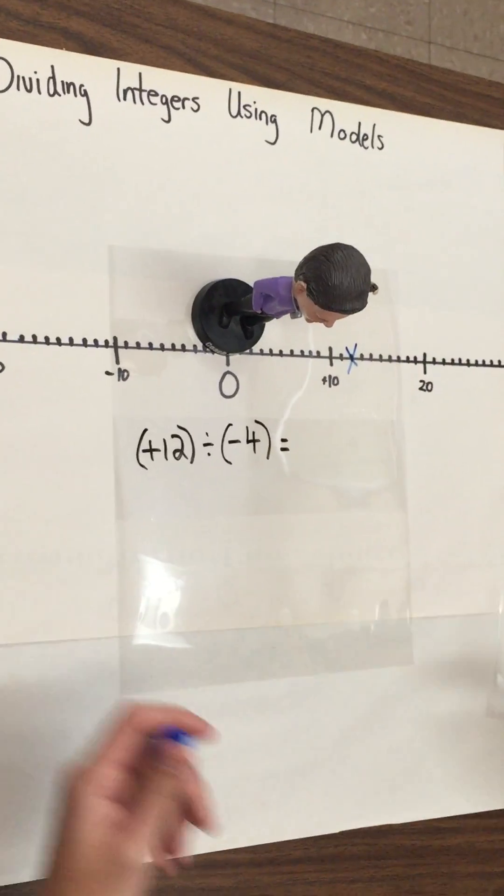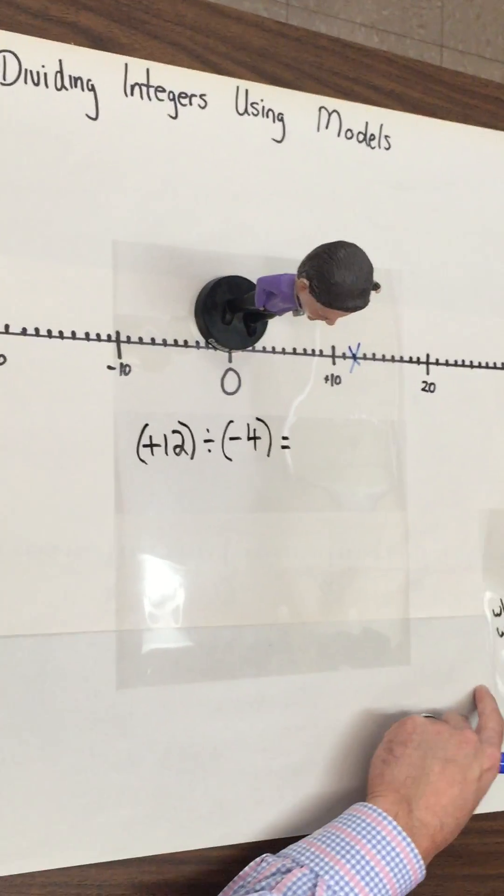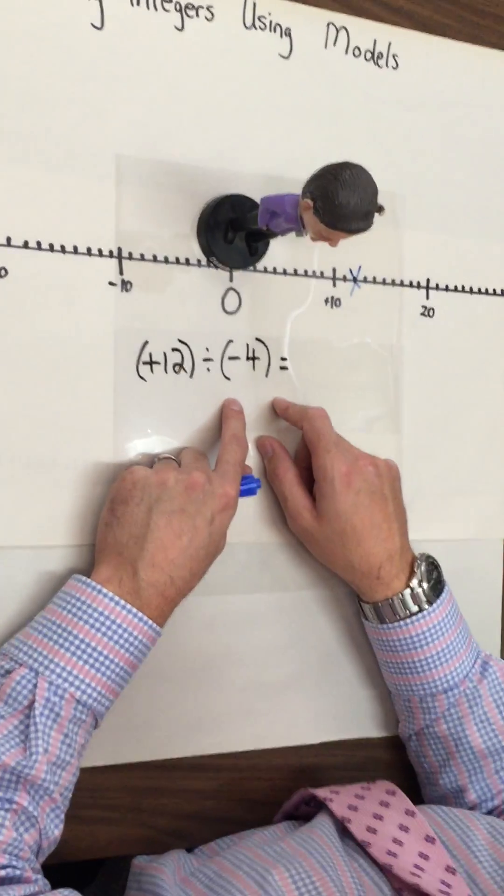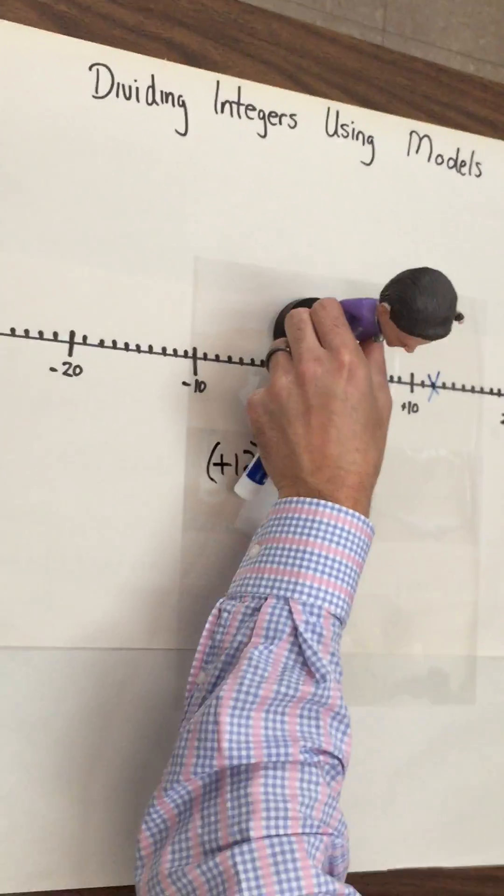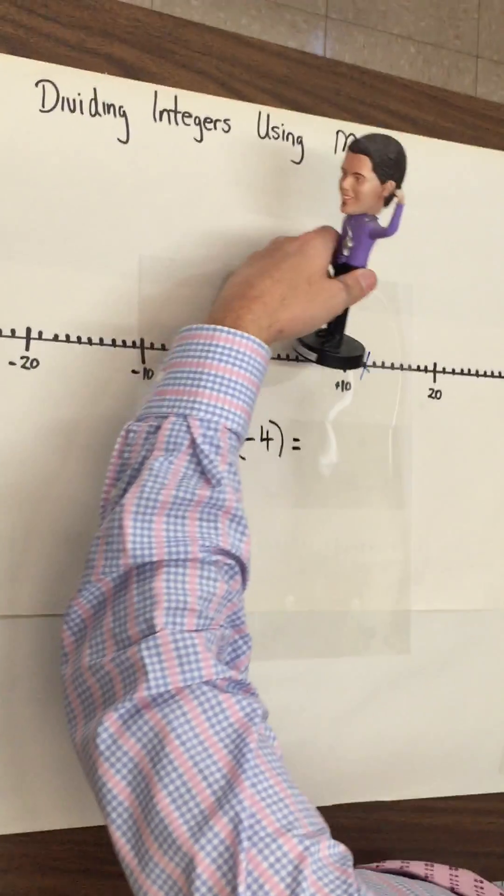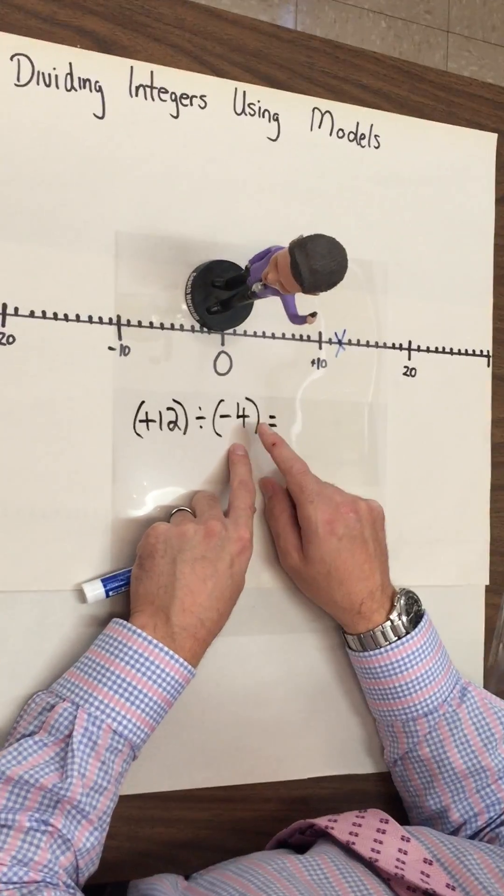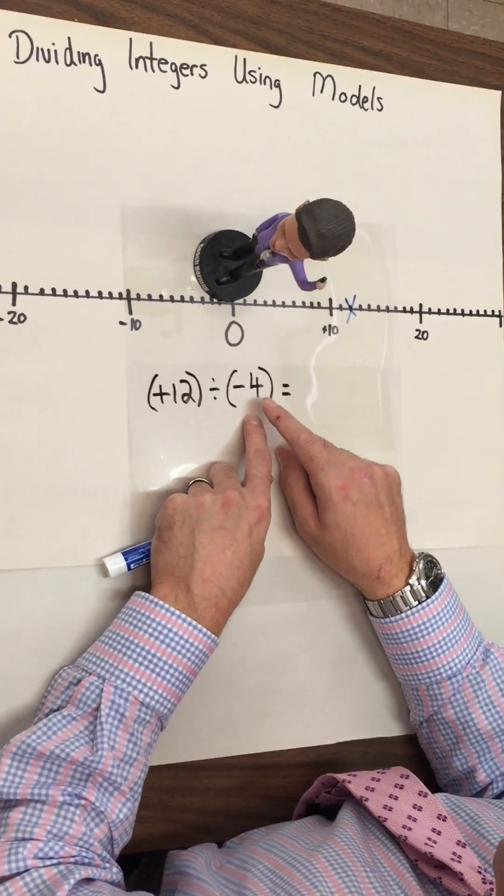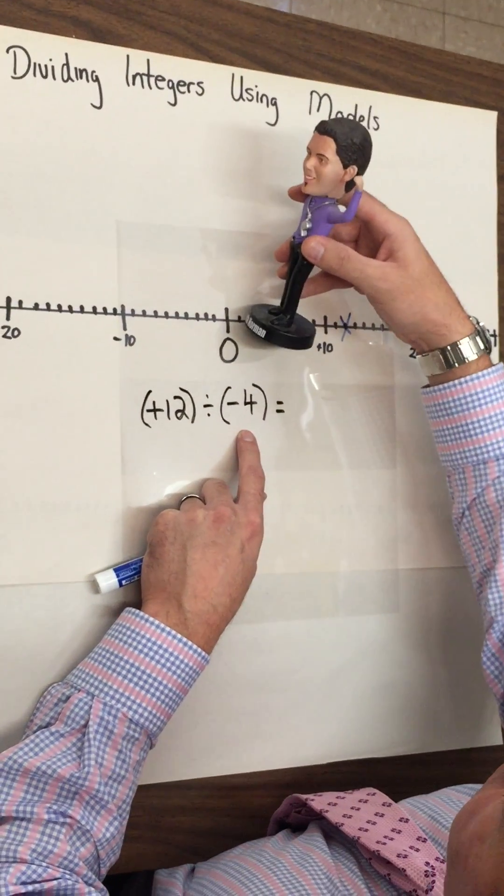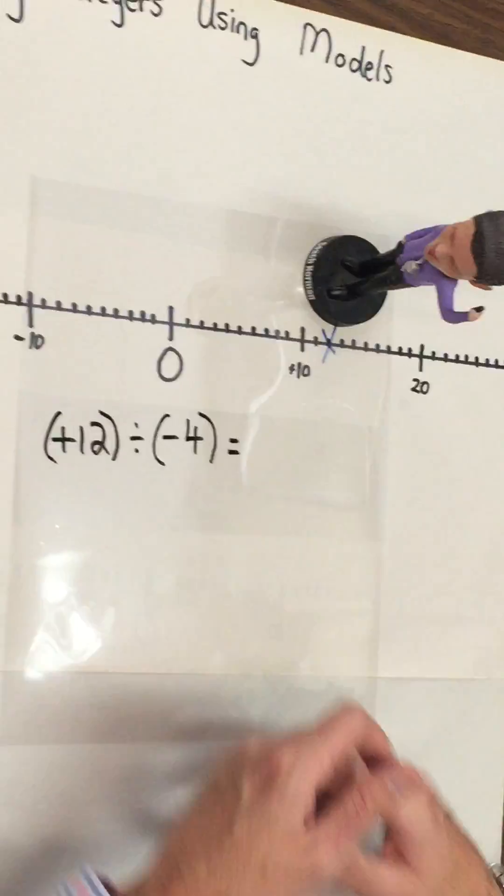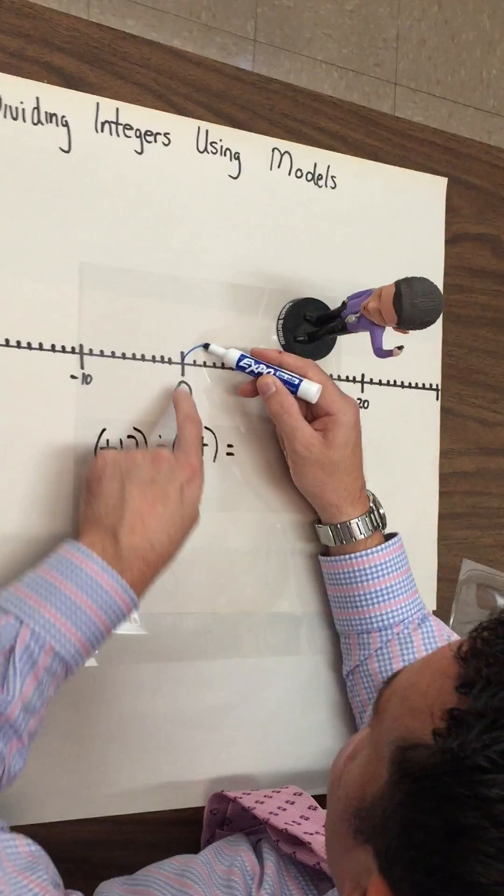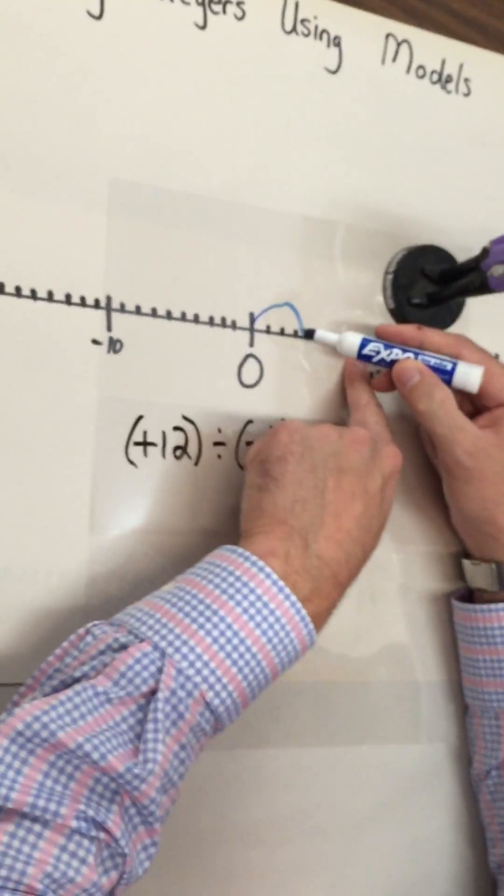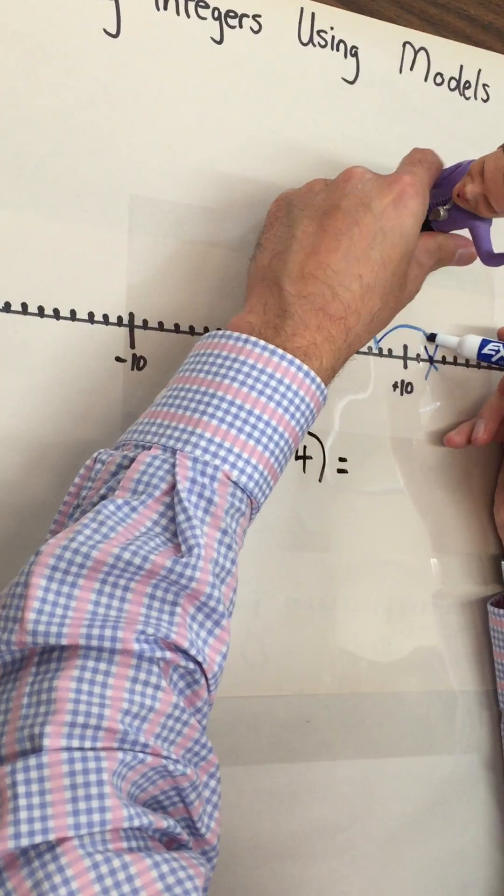That's where I want to end up. Now, the second number tells me, am I walking forward or am I doing the moonwalk? In this case, it's a negative sign. So I will be getting to this blue X using my moonwalk. All right. Well, I know I'm moonwalking. My next question is, how big are my steps? In this case, it's four. So I'm going to be moonwalking four steps each time until I hit positive 12. So let's go one, two, three, four. So I'm going to jump from there to there, to there, one, two, three, four, to there. And I end up right here. Boom.